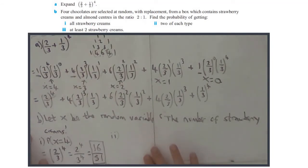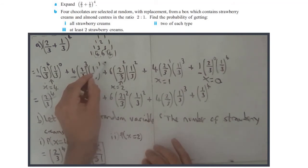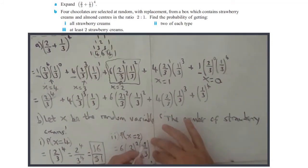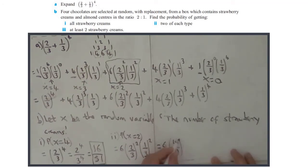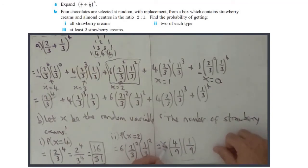Part B2: probability of two of each type. So P(X equals two) is this term — equals six times two-thirds squared times one-third squared. That's six times four over nine times one over nine. You can simplify: six over nine is two over three, giving two times four over three times nine, which is eight over 27.